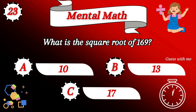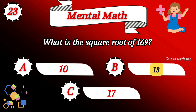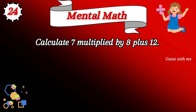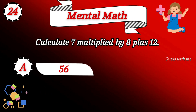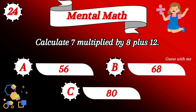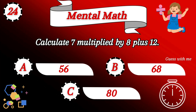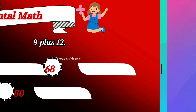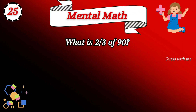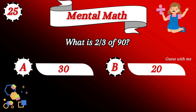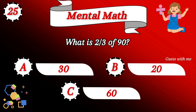Question number 23: what is the square root of 169? 13 is the right answer. Your next mental math challenge: calculate 7 multiplied by 8 plus 12. Option B — 28 is the right answer. What is 2 by 3 of 90?